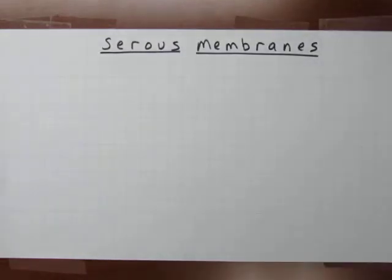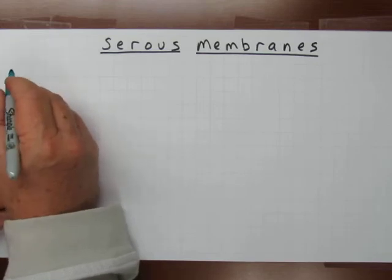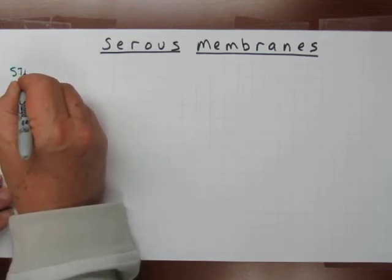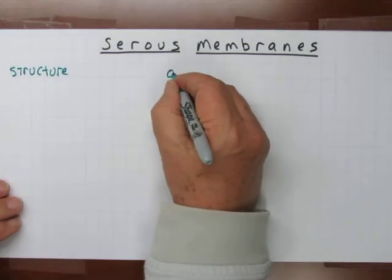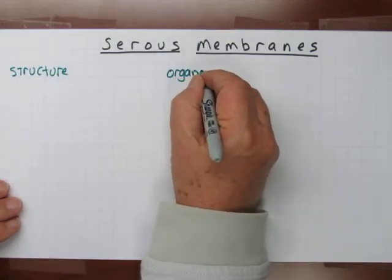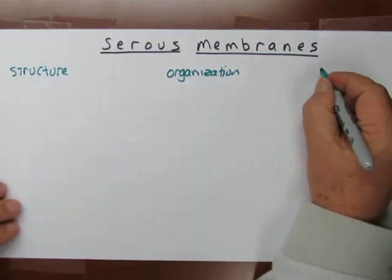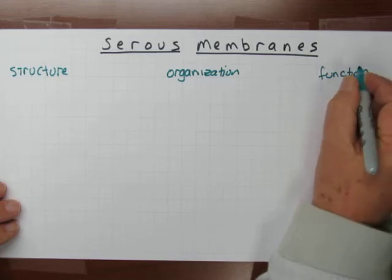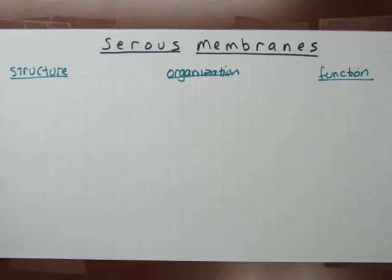We're looking at serous membranes, and we can divide that into three topics. Let's look at the structure, the organization, and the function. We'll look at these individually and they'll help give you the picture of the whole. Let's start with the structure.